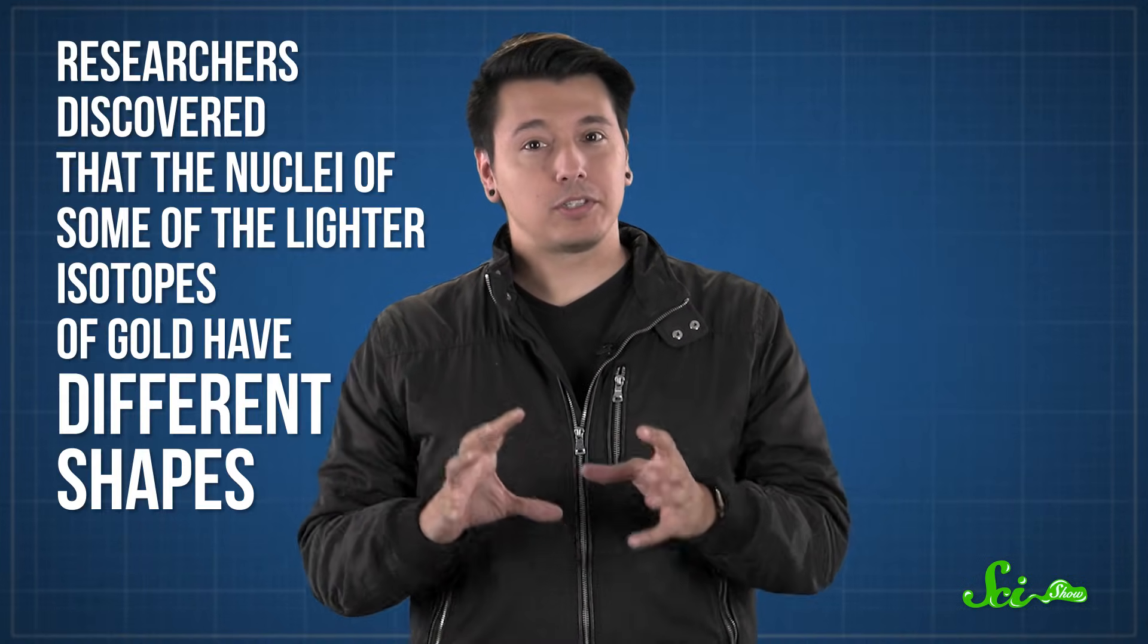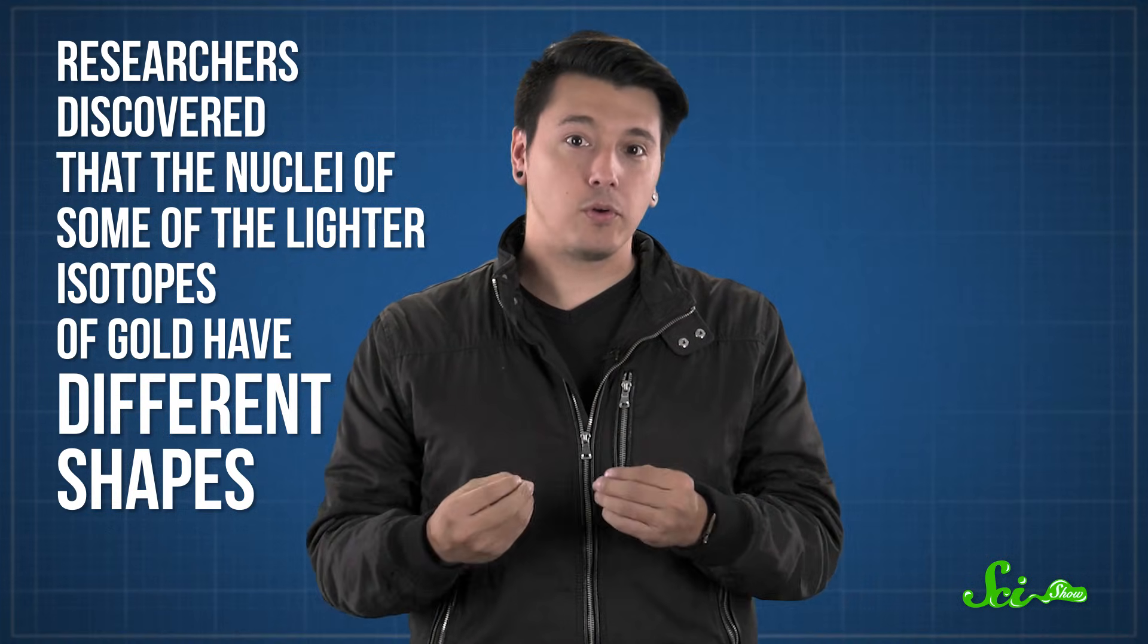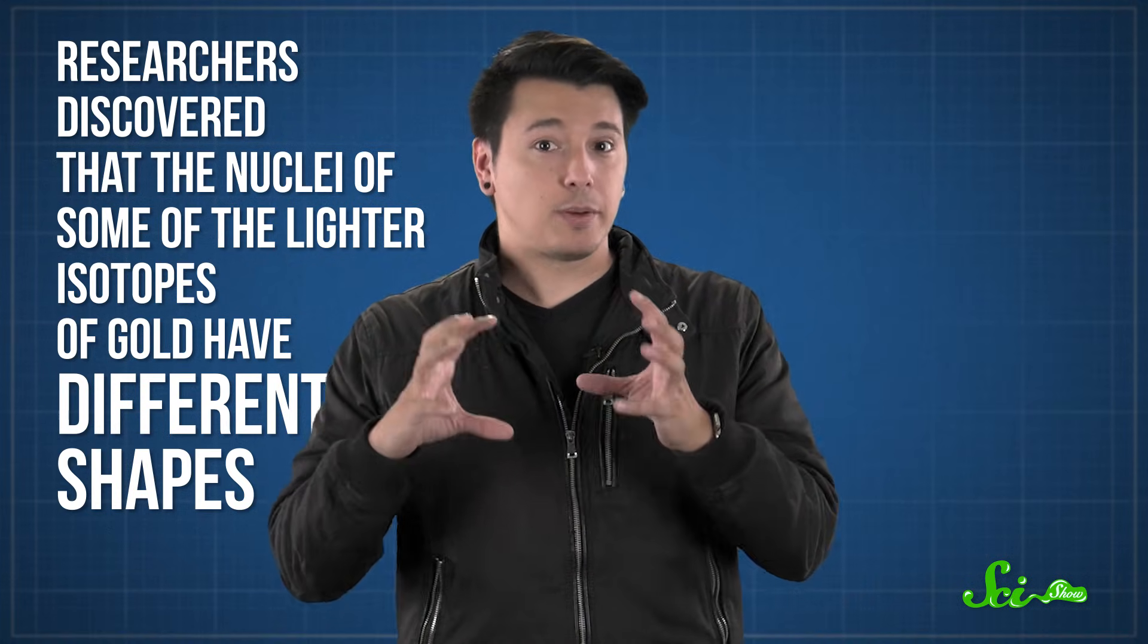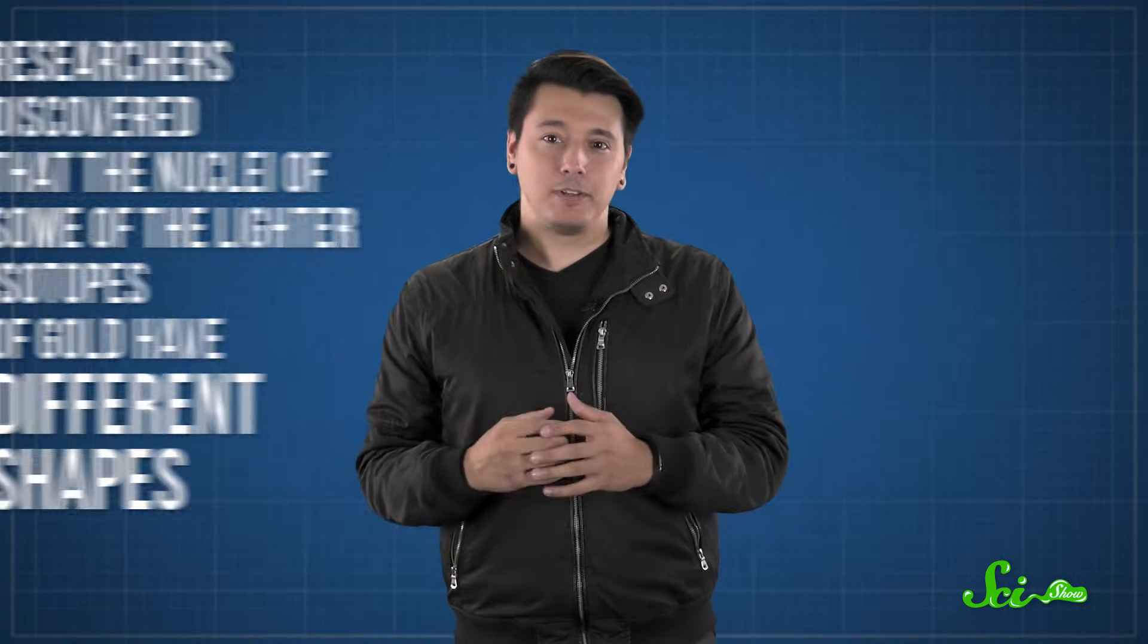And yet, we're still performing these kinds of experiments all the time. Because even though it isn't a very good money-making scheme, we can learn more from them than the ancient alchemists could have ever imagined. For example, in the late 1980s, researchers at CERN discovered that the nuclei of some lighter isotopes of gold have different shapes. Some are close to spherical, but others are much more deformed. And physicists are still trying to figure out exactly how that works. So even if we aren't able to make vast quantities of stable gold, I guess you could say we finally did discover the Philosopher's Stone. Or maybe the Philosopher's Particle Accelerator. It's not making money or turning us immortal, but it is teaching us a lot about physics. And we didn't even have to use pee, or cat hair, to make it happen.